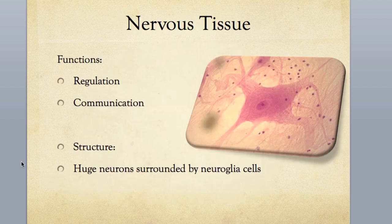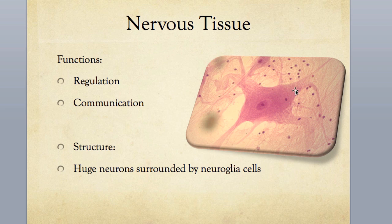Nervous tissue is another one, like muscle or epithelium, that's mostly cells. Like skeletal muscle, we have a very distinctive cell type here called the neuron. These are also whopping huge cells — another one of the biggest in the whole body — and they have strange projections on them that make them look stellate, like a star, with sticky-out parts and the nucleus inside. You might not realize right away how huge they are until you check the magnification. The darker spots are the nuclei of smaller cells called neuroglia — supporting cells of the nervous system — which tells you the neuron itself must be very big.